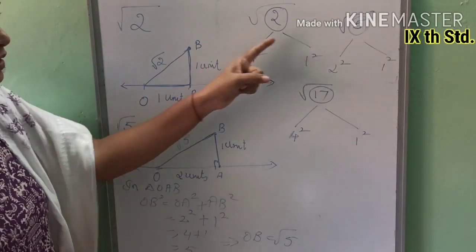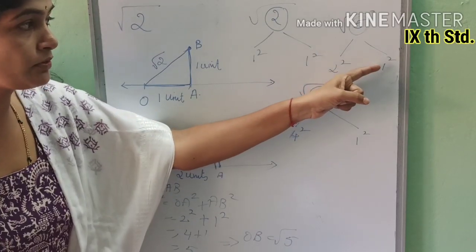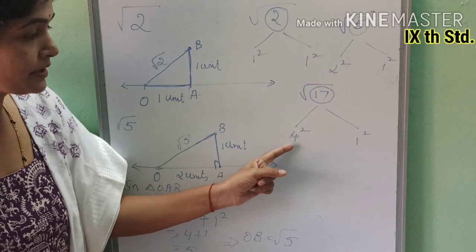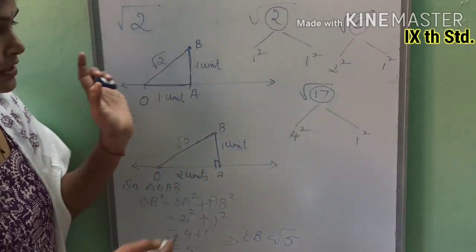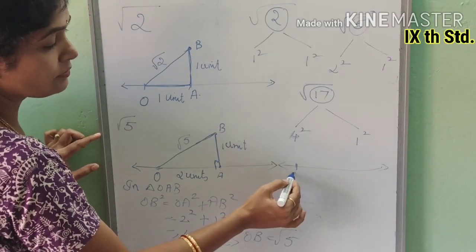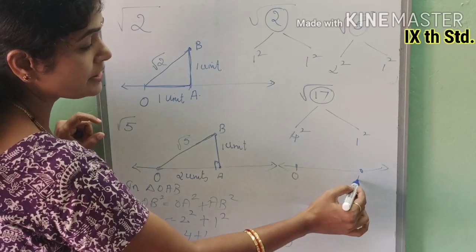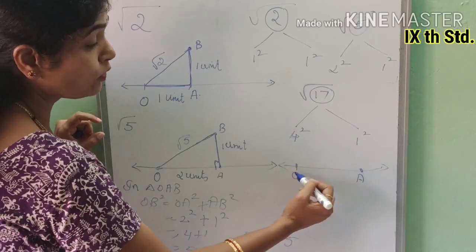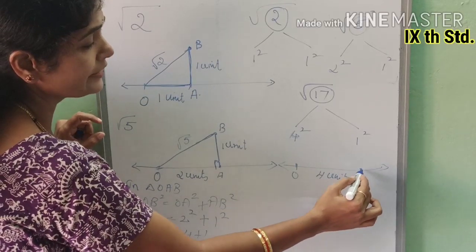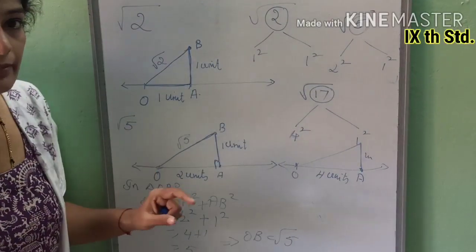For root 17, since 17 = 4² + 1², we mark point O, take 4 units to point A, draw a 1 unit perpendicular, and join O to that point. This gives root 17. This is the easier way using this splitting method.